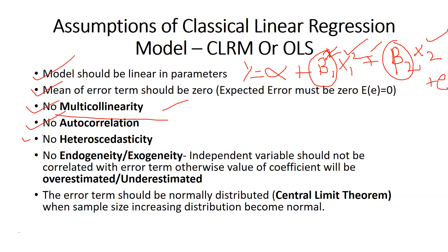Heteroscedasticity — I have already made a video on heteroscedasticity and I will give the link in my description box. Heteroscedasticity relates to the error term. We use the terms homoscedasticity and heteroscedasticity. Our model should have homoscedasticity; it should not have heteroscedasticity.